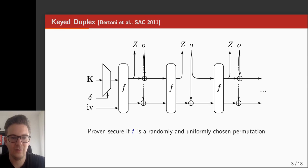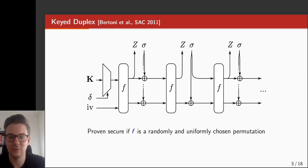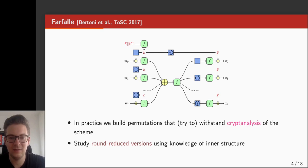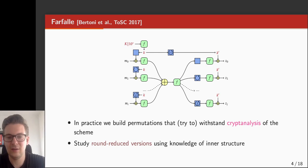An example of a keyed mode is the keyed duplex, which has also been proven secure against generic attacks if the primitive f is a randomly and uniformly chosen permutation. So these two examples show that the design space traditionally is split into two: on the one hand, people design modes built on top of ideal primitives, and on the other hand, people try to design primitives to behave like ideal ones.